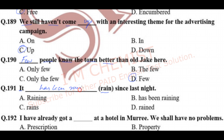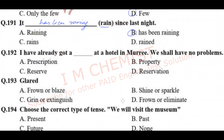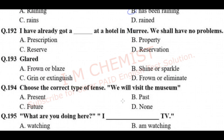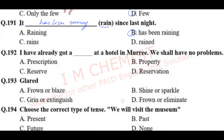Question number 191: 'It has been raining since last night.' This is in the present perfect continuous tense. We use 'since' for an action which started in the past and is still continuing. The right option is option B.